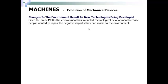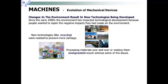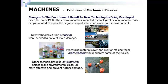Changes in the environment result in new technologies being developed. Since the early 1960s, the environment has impacted technological development because people wanted to repair the negative impacts they made on the environment. New technologies like recycling were needed to prevent more damage. Processing materials over and over or making them biodegradable would address some of the issues. Other technologies, like oil skimmers, help make environmental cleanup more effective and prevent further damage — for example, for oil spills.